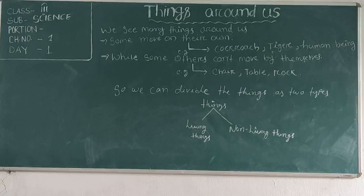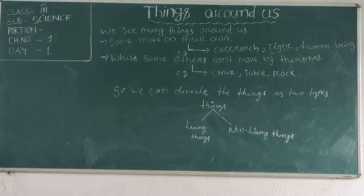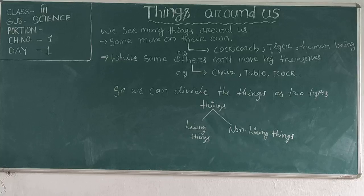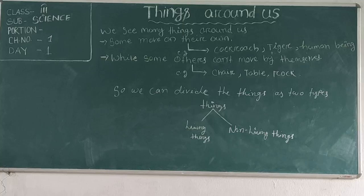Thing is a noun. The definition of thing is an object, an act, or some places are included in it. But animals and humans should not be called things because they are beings, not things.